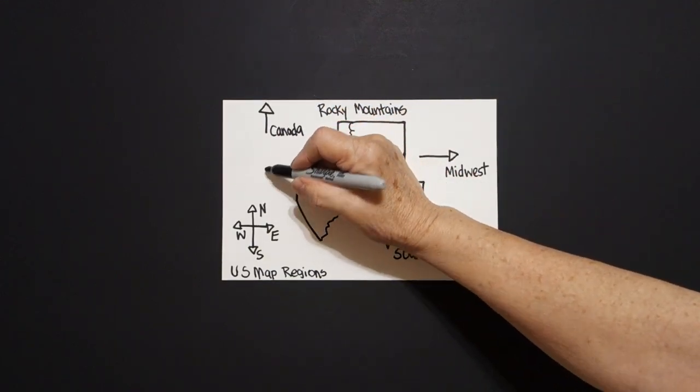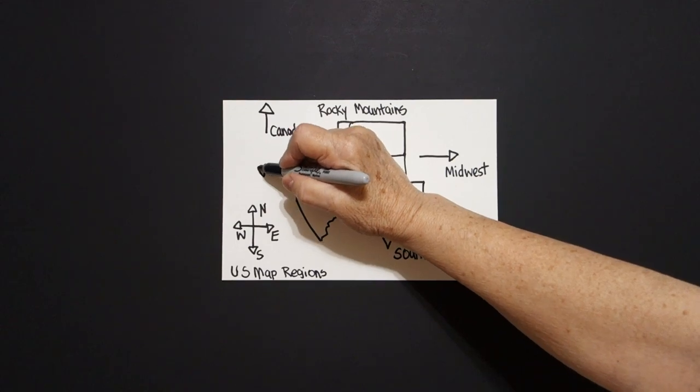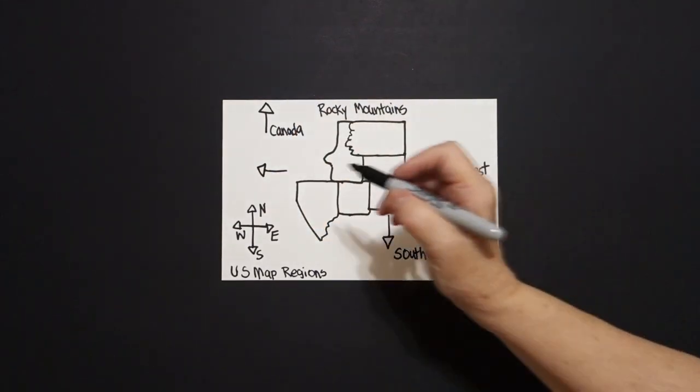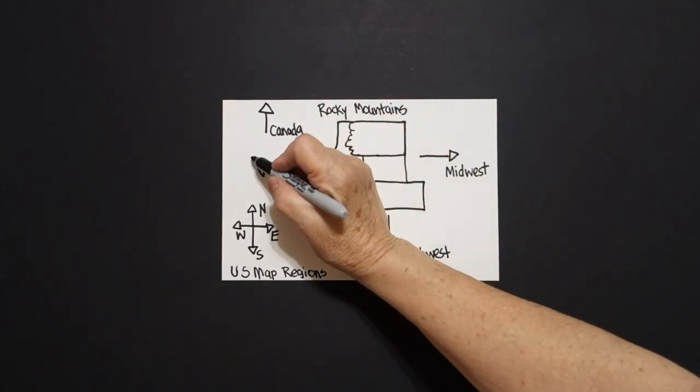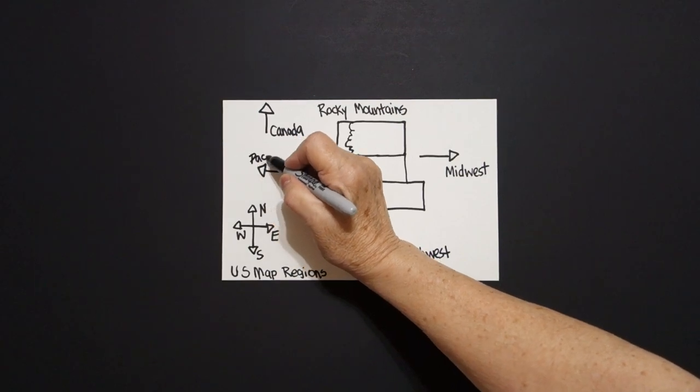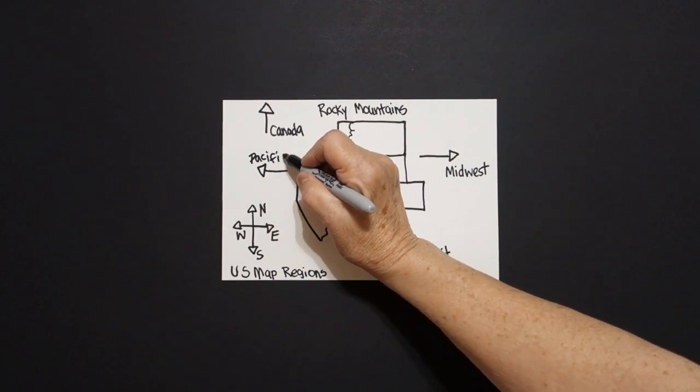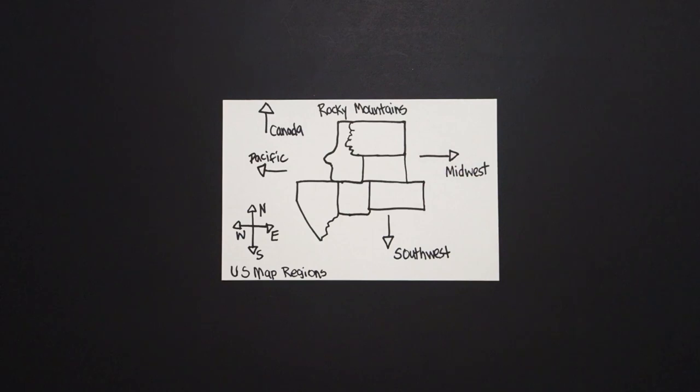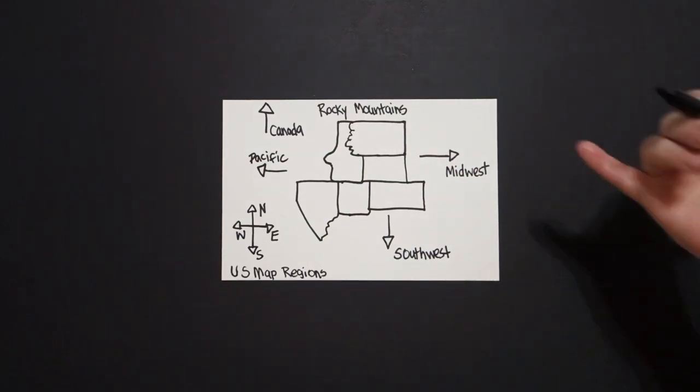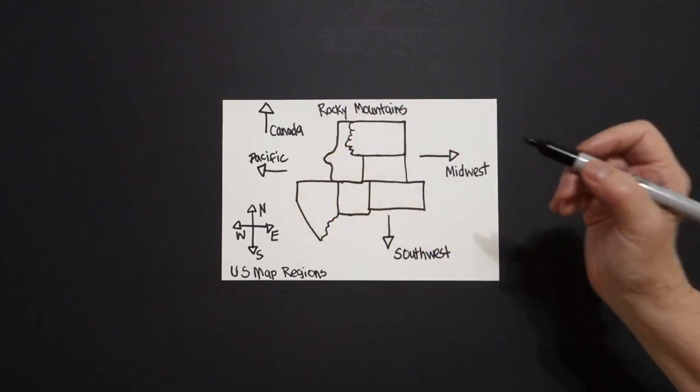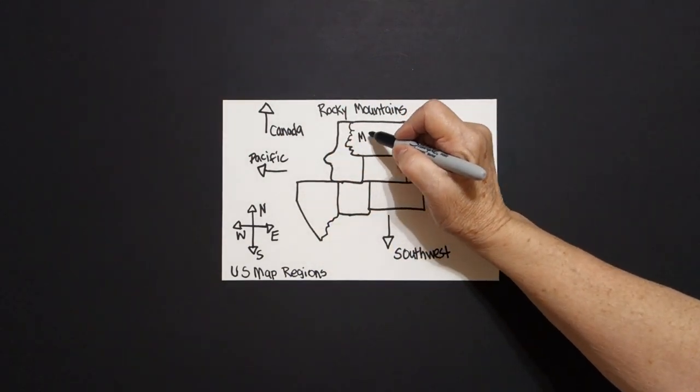And if we go straight line, triangle, west, we're going to hit the Pacific region. Now this Rocky Mountains region is interesting because it is landlocked. There's no bodies of water here.